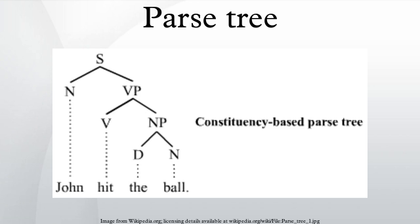Dependency-based parse trees: The dependency-based parse trees of dependency grammars see all nodes as terminal, which means they do not acknowledge the distinction between terminal and non-terminal categories. They are simpler on average than constituency-based parse trees because they contain many fewer nodes.